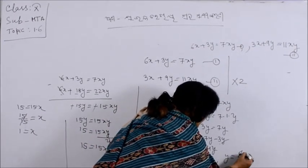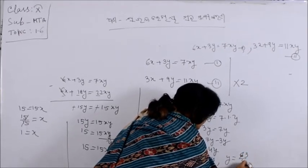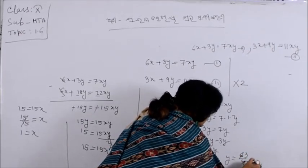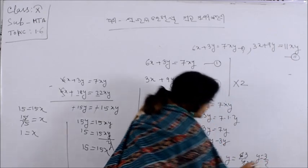I cut 3, 2 is equal to 3. I cut 2. So y is equal to 3 by 2.